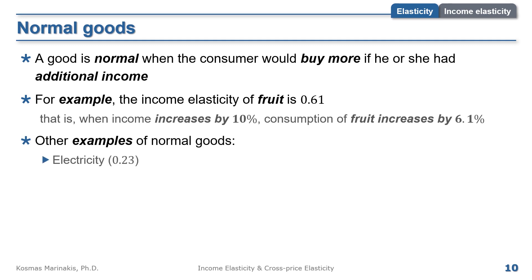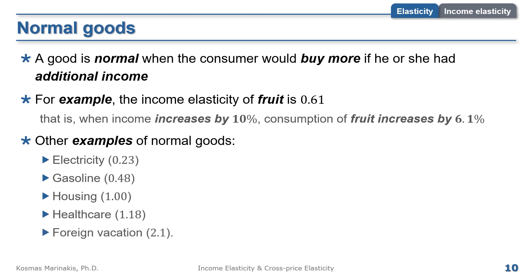Examples of normal goods include: electricity with income elasticity of 0.23, gasoline with 0.48, housing with exactly 1, healthcare with 1.18, and foreign vacation with 2.1. In most older textbooks, goods with income elasticity above 1 are classified as luxuries, while those between 0 and 1 are necessities. Modern economics doesn't follow this distinction as strictly, because some contextually luxury goods have elasticities below 1 and vice versa — for example, healthcare has income elasticity above 1, but you cannot argue it's a luxury; it's actually a necessity.